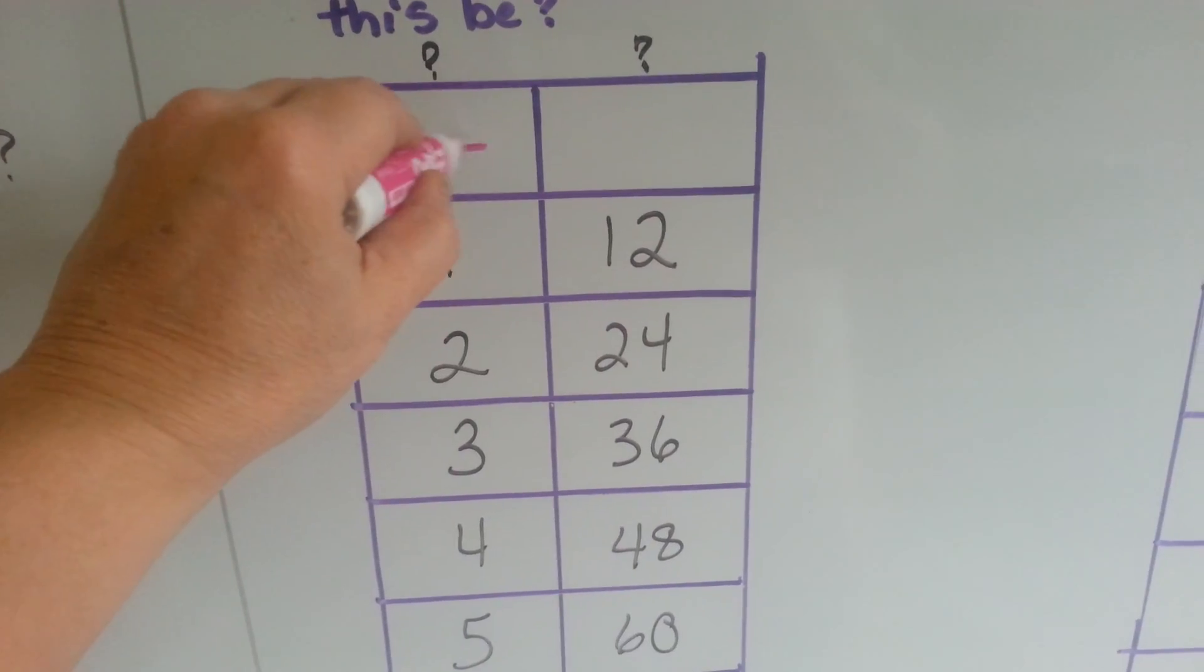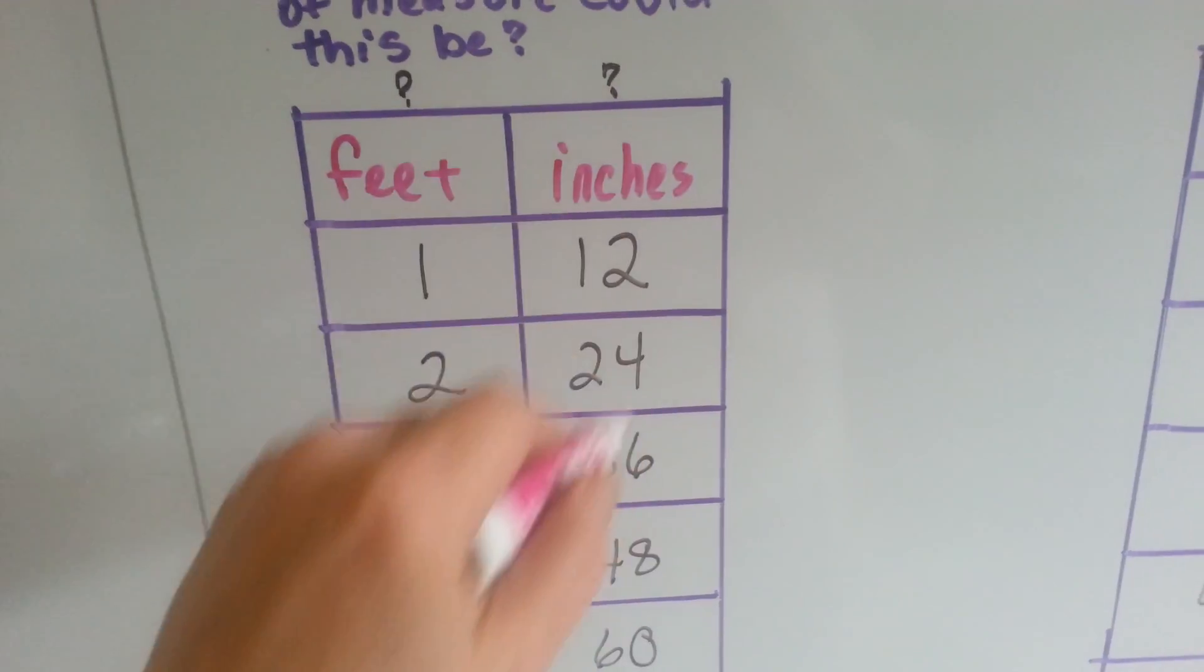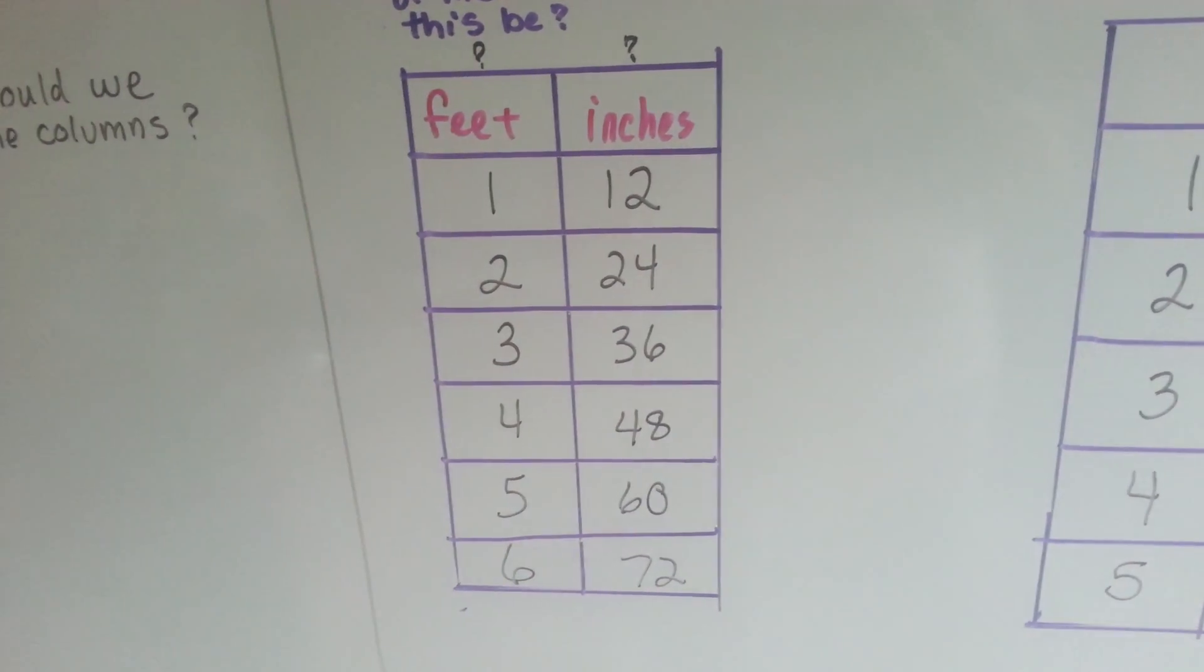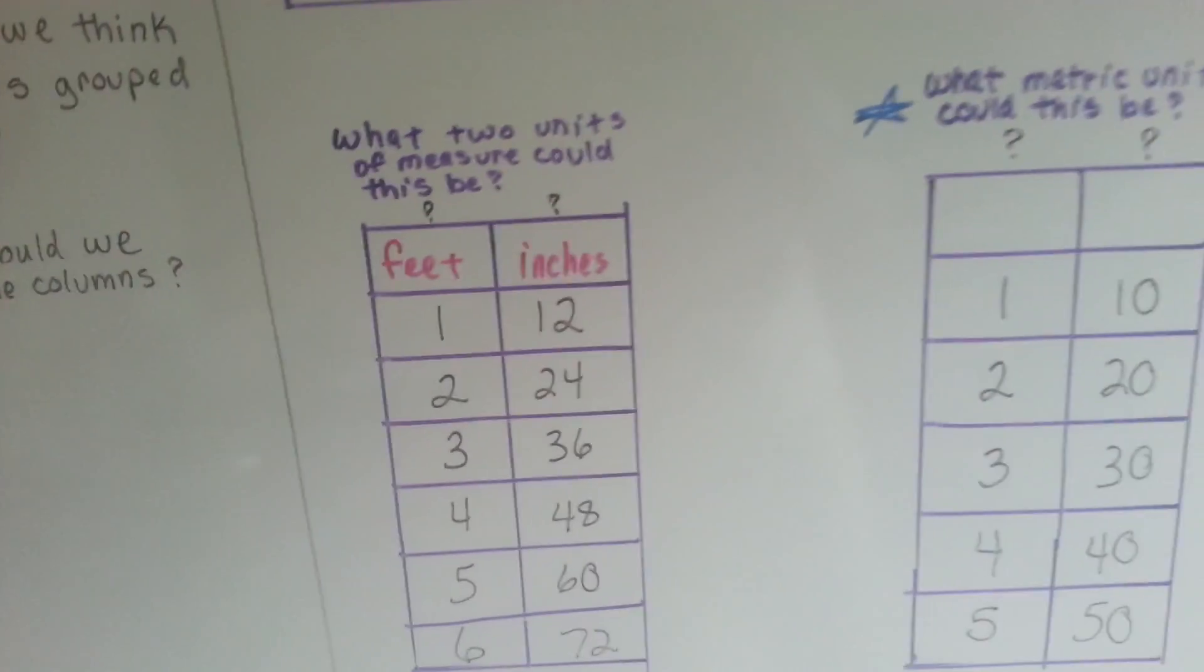So this is feet and this is inches. One foot is 12 inches. Two feet is 24 inches. And it goes down the chart.